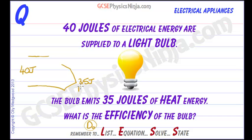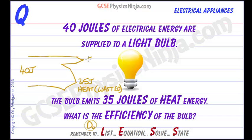But is that useful or is that wasted energy? Well, that is wasted, because it is a light bulb — we want light from a light bulb, not heat. So that is wasted energy, which means 5 joules must therefore be useful light energy.